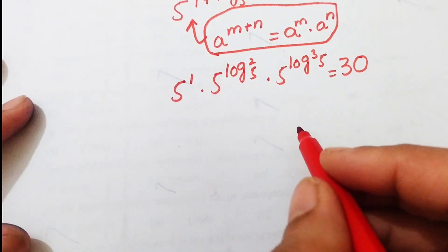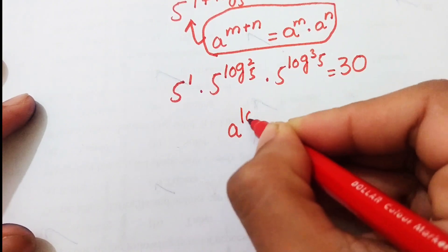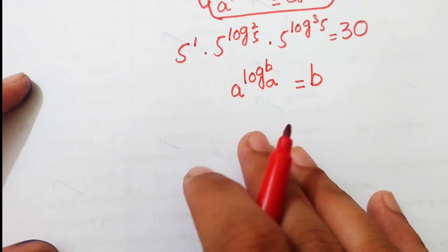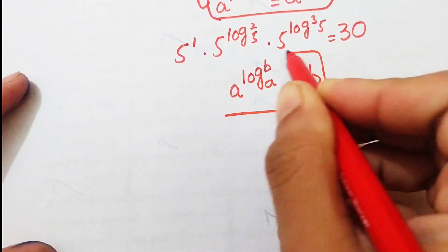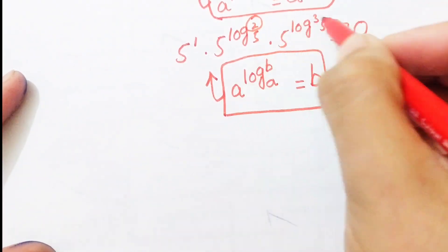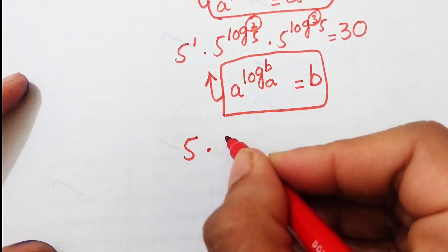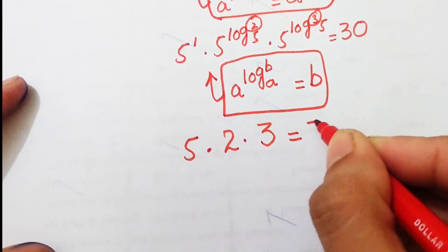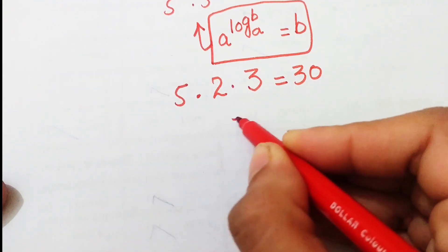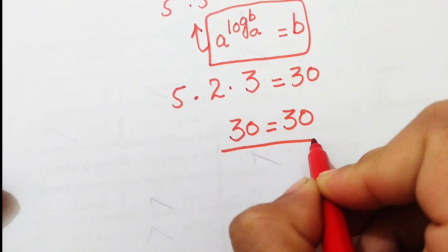Now we apply the property of log: a^(log_a p) equals p. By applying this, our b values are 2 and 3, so we get 5 times 2 times 3 equals 30. We know that 5 times 2 is 10 and 10 times 3 is 30, which confirms our answer is correct.